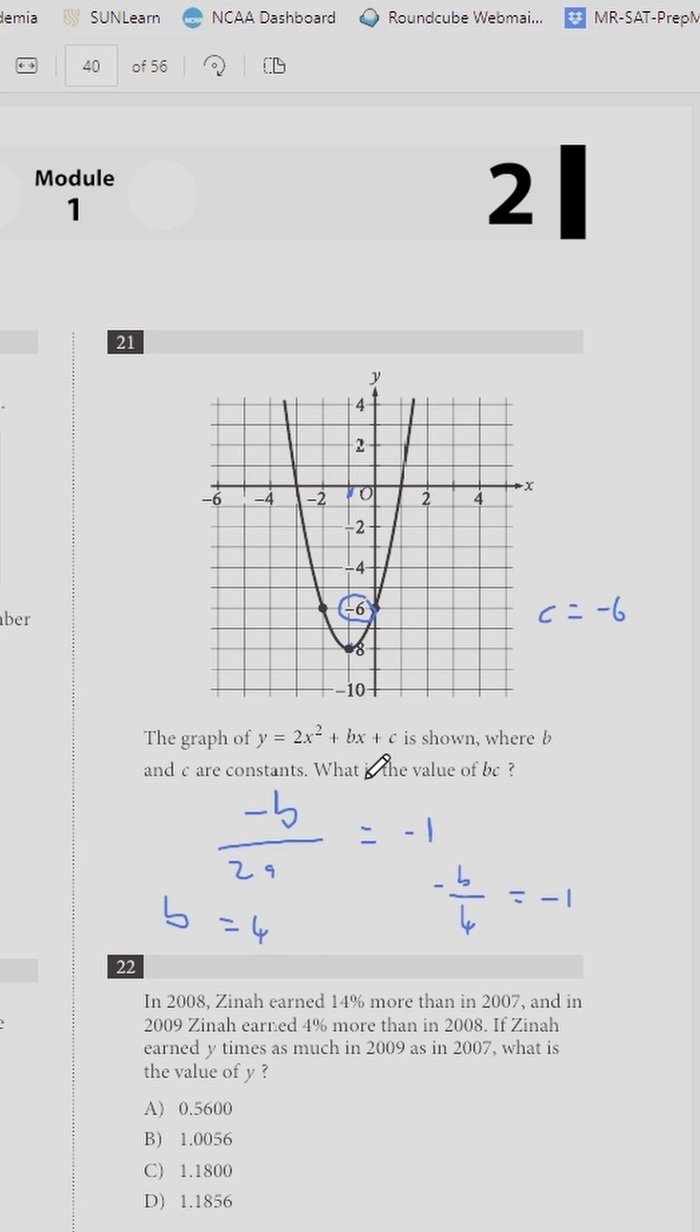Because of this, the value of bc would be 4 times -6, which equals -24.